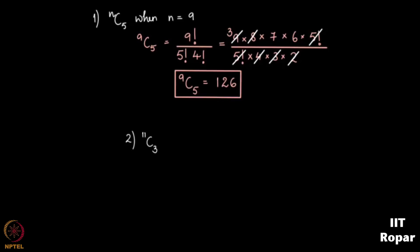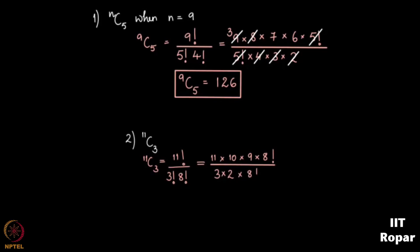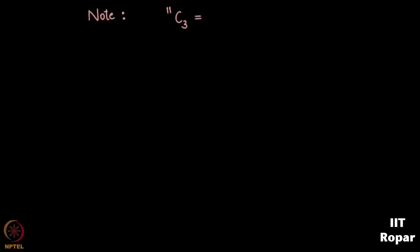What is 11 choose 3? Applying the formula, it is 11 factorial by 3 factorial into 8 factorial, which is the same as 11 into 10 into 9 into 8 factorial, divided by 3 into 2 into 8 factorial. The 8 factorial cancels, and after simplification 11 choose 3 is 165. Note that 11 choose 3 is the same as 11 choose 8, so 165 also equals 11 choose 8.